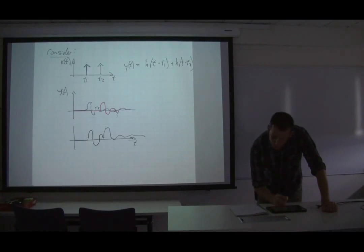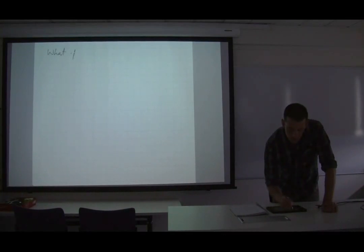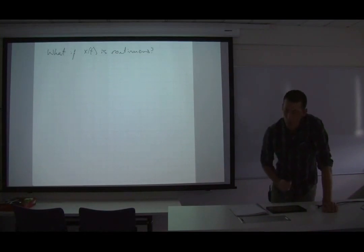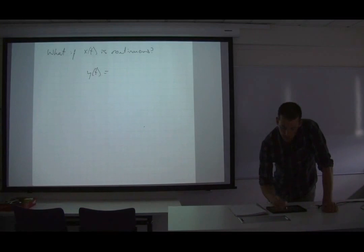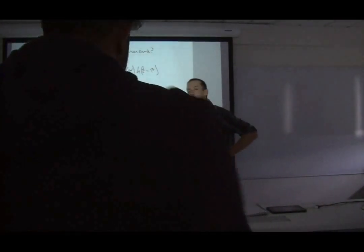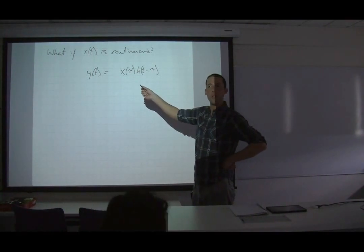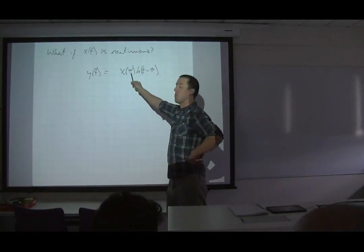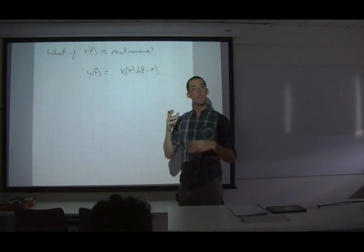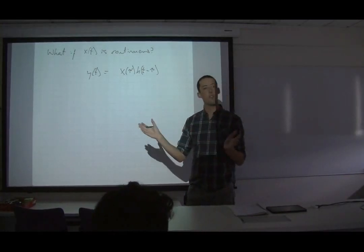So in general, if X of T is continuous, Y of T will be an integral. We want to have a whole bunch of these terms added together — one impulse at tau equals T1, another at T2. And the way to do that for continuous time is to perform an integral.